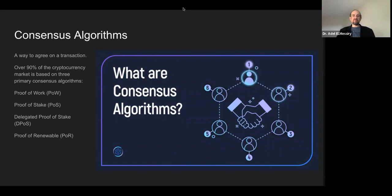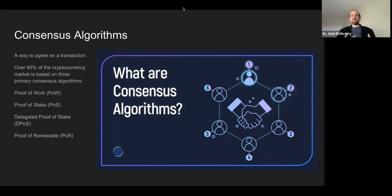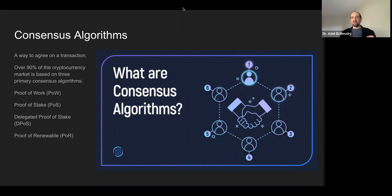The consensus algorithms are used so that we can agree on the facts. That's why you hear a lot about the 51% attack — it means somebody was able to control or coerce more than 50% of the network, and hence in the consensus algorithm they were able to change the facts after they had been written. That is a very small chance in big chains like Bitcoin, Ethereum, and Casper, but there is a chance for that in smaller chains with fewer nodes or validators. You hear more about attacks happening on Ethereum Classic but not on Ethereum.